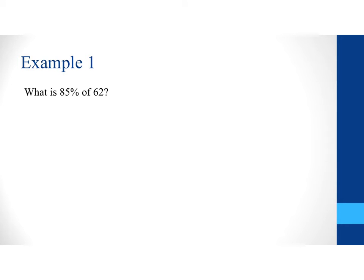For example one, what is 85% of 62? So, because I have this key word of, this generally tells me that I'm going to have to multiply these two numbers together. So, I'm looking for some number n, and I'm going to say that n is equal to 85%. Well, remember we're going to write percentages as decimals. So, 85% is really equal to .85. So, I'm going to rewrite that as .85. The word of means to multiply, and I'm going to multiply it by 62.